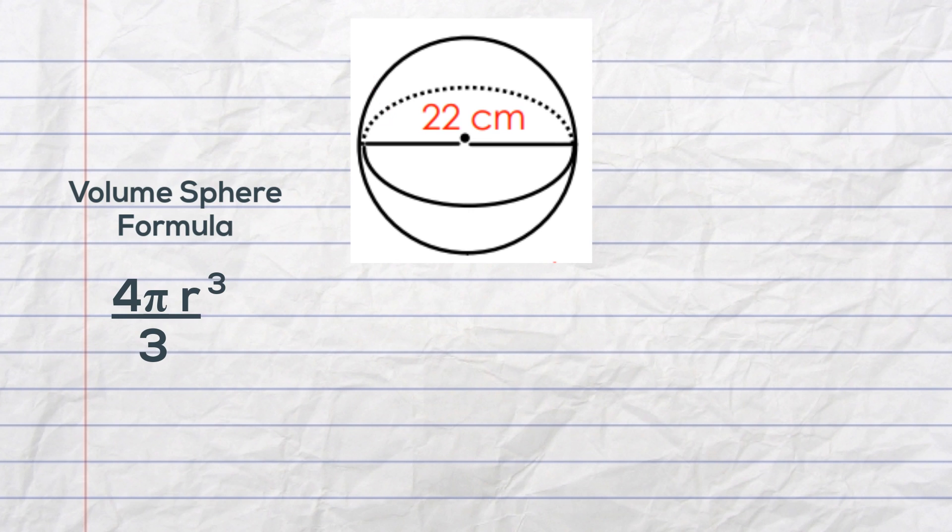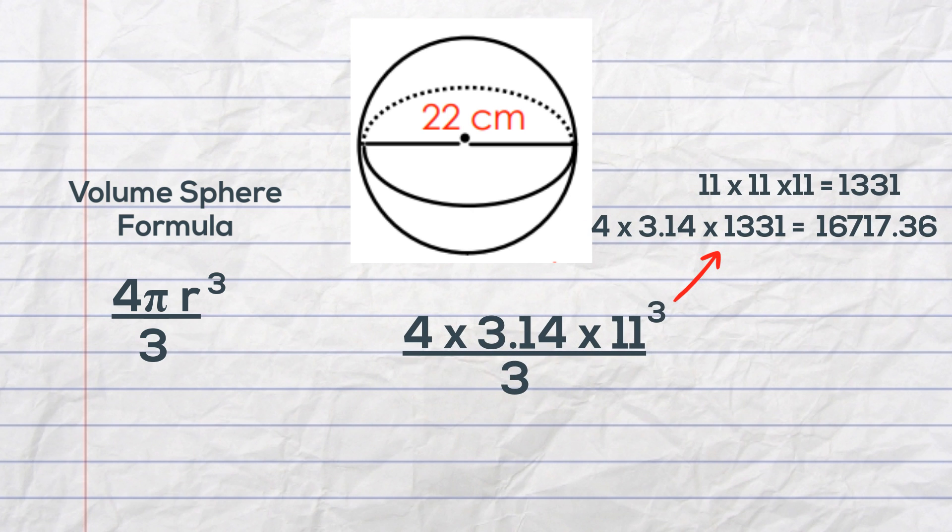So I then plug in the numbers. When I divide the diameter by 2 I get 11 so it's 4 times 3.14 times 11 cubed over 3.